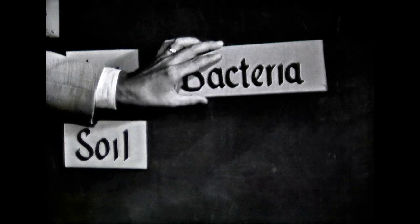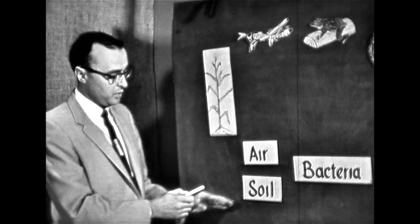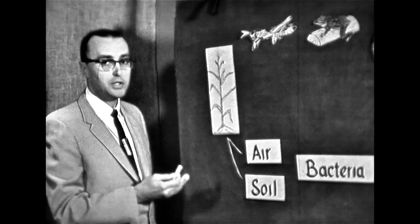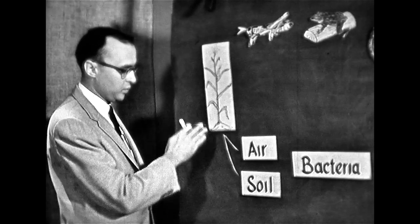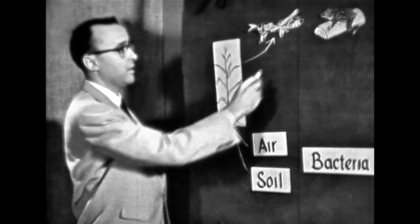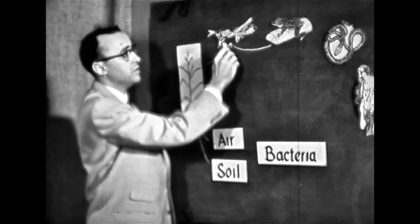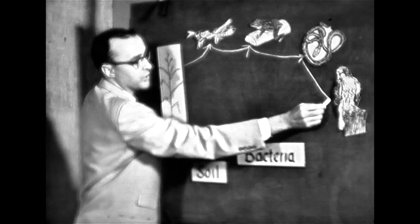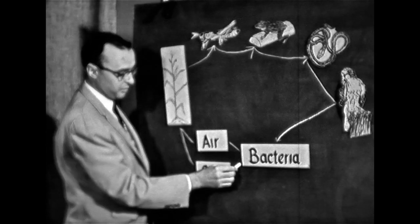Now let's review quickly just exactly what has happened here. We have taken from the air and soil minerals, water, carbon dioxide, and put them together with the energy of the sun to make living materials. The energy which was stored in this corn plant — the sun's energy really stored in the corn plant — would go to the grasshopper when he ate the corn. The frog would get some of this energy when he ate the grasshopper. The snake would get the energy when he ate the frog, then it would go to the hawk. And when the hawk died, the energy would go to the bacteria and the materials would go back to the air and the soil.